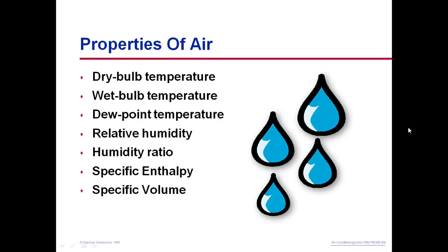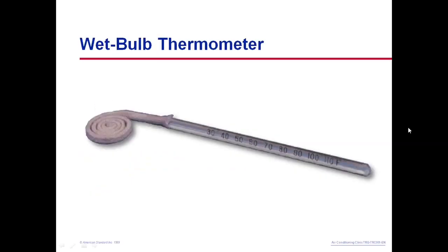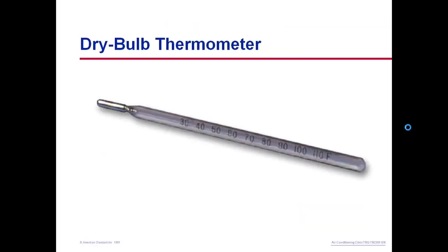These are seven properties found on the psychrometric chart. If we know any two of these seven properties, we can locate the condition of air on the psychrometric chart, and the other five properties can be read from it. The three temperatures are dry bulb, wet bulb, and dew point, along with relative humidity, humidity ratio, specific enthalpy, and specific volume.